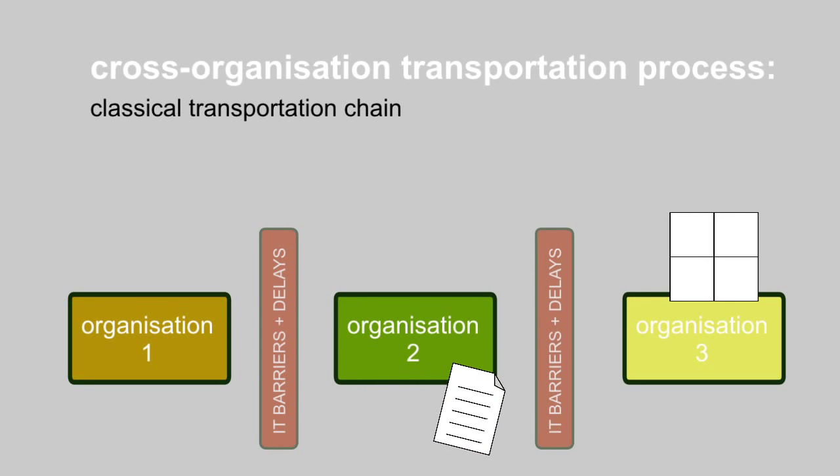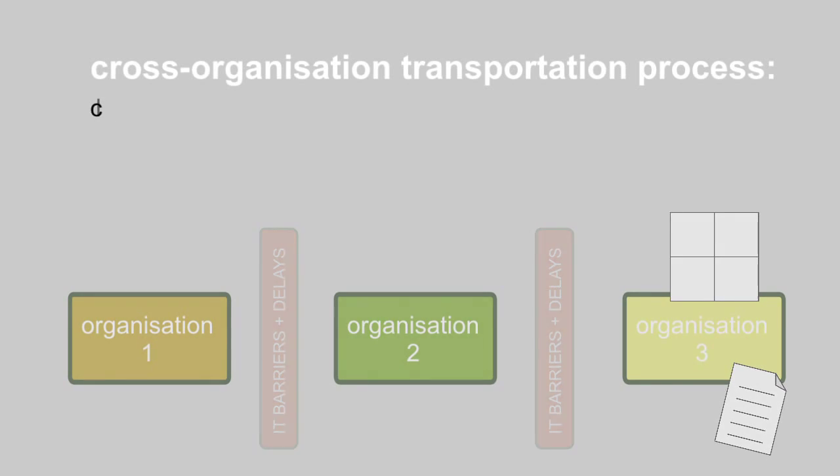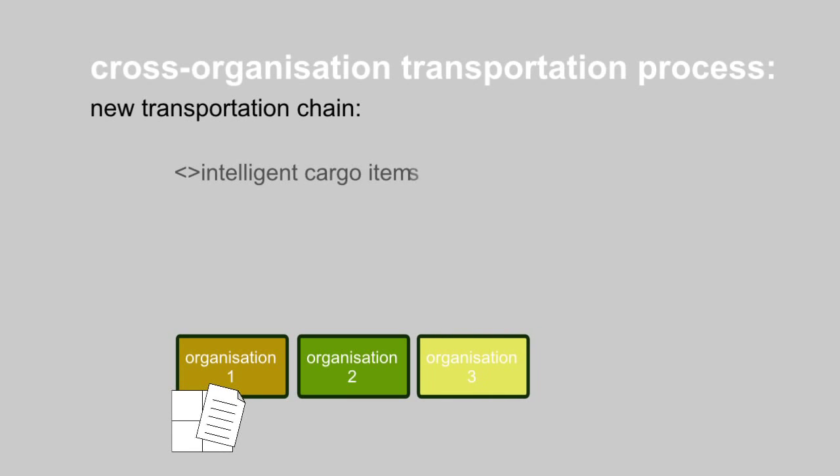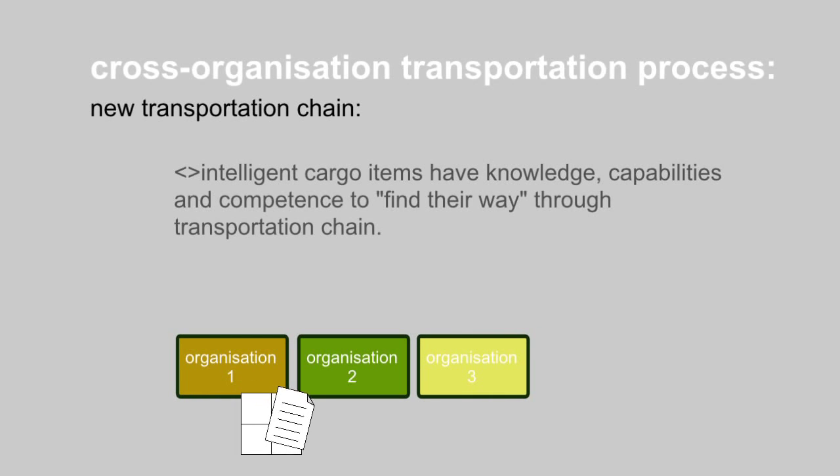This can cause significant delays in the handling of the cargo. An intelligent cargo system does away with the paperwork by providing each item of cargo with the knowledge, intelligence and capabilities to navigate its own way through the transportation process.